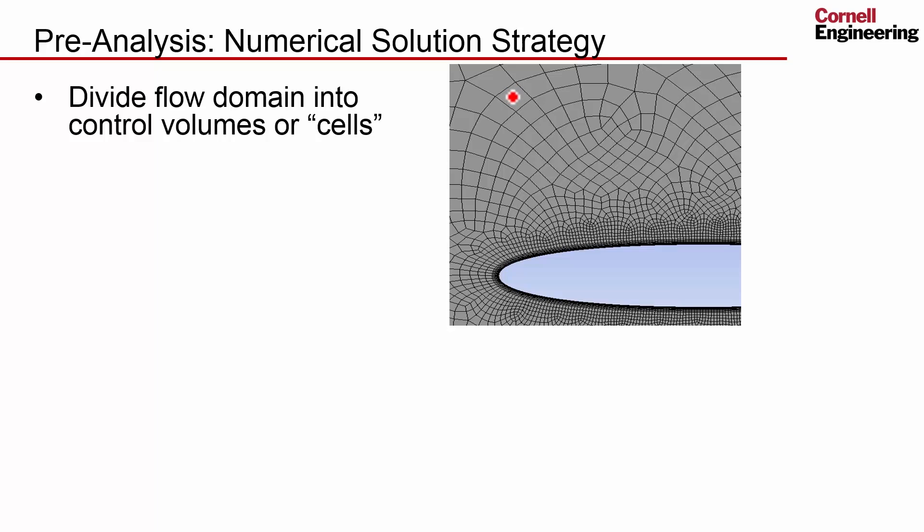For instance, a cell center like that. At each cell center we need the velocities, the two components of velocity, the pressure all Reynolds averaged, and then also k and epsilon. So the solver will determine five quantities, five values at every cell center.